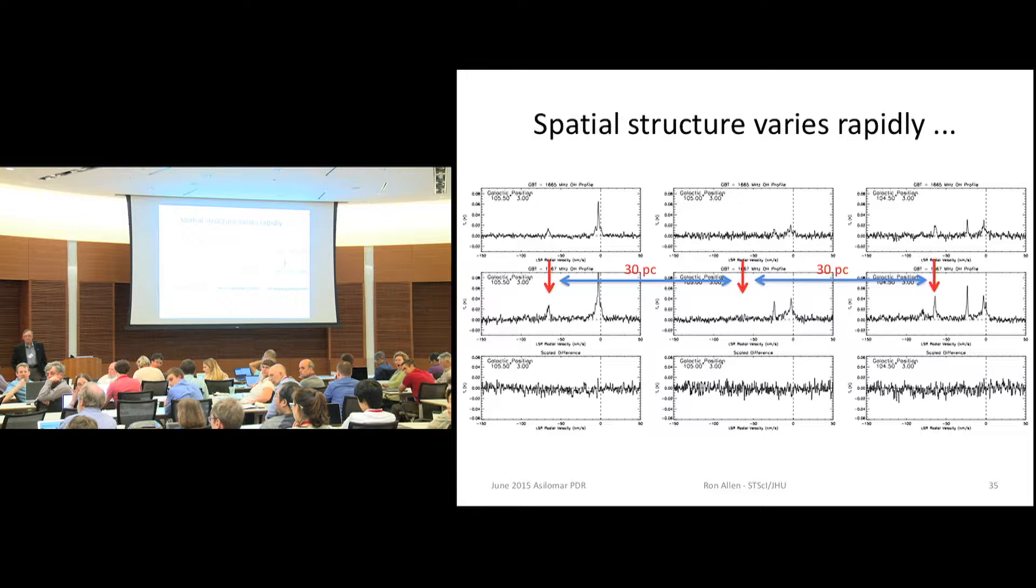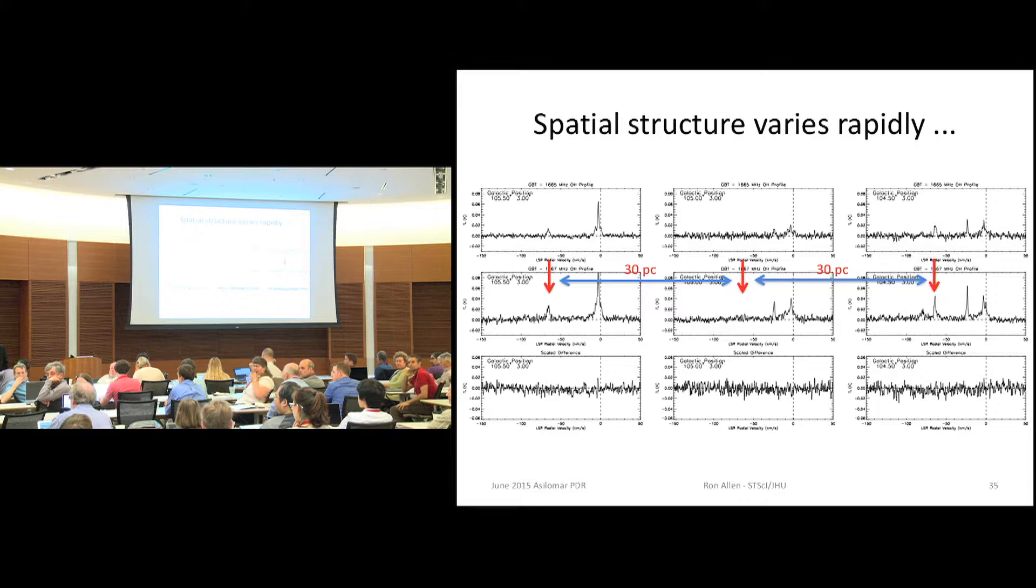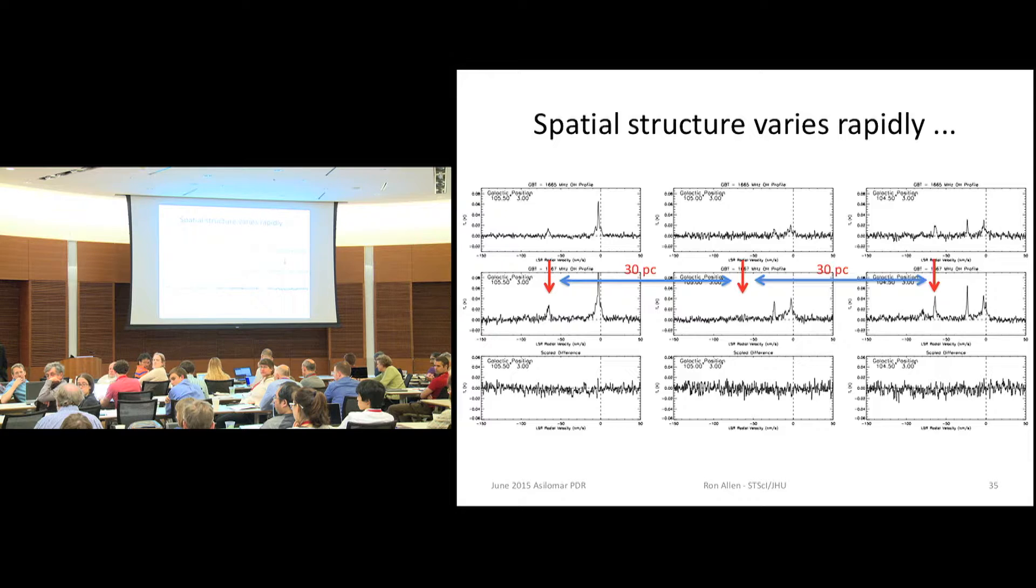So I have a question for observers. So we saw all these very small scale structures that also changes rapidly and so on. But did someone investigate the influence of selection effect? So how you are more likely to see small scale structures? And how you are more likely to notice that they change rapidly?